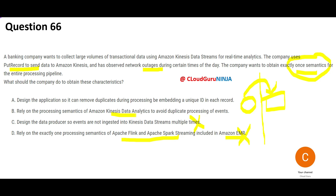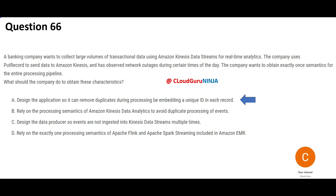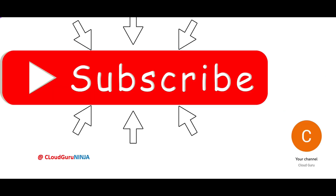Option B says rely on Kinesis Data Analytics to avoid duplicate processing — but Kinesis Data Analytics is not even part of this architecture; the question is about Kinesis Data Streams. So the correct answer is option A: design the application so it can remove duplicates during processing by assigning a unique ID to each record. That is how you handle exactly-once semantics.